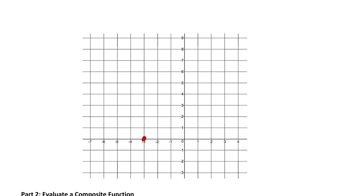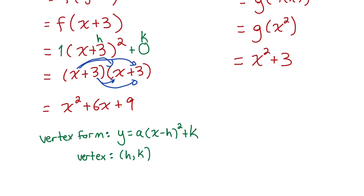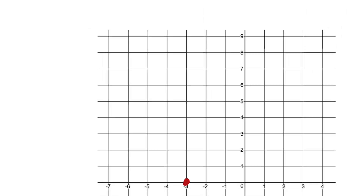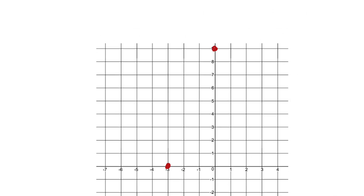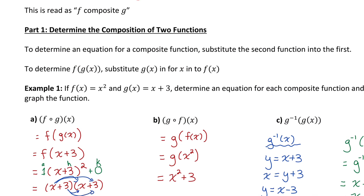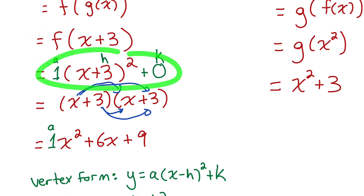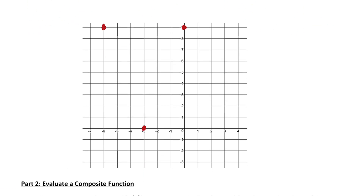I know this quadratic opens up because the a value is positive 1. From the standard form, I can also see the constant value is 9, which means the y-intercept will be at 9. Because quadratics are symmetrical, if 3 to the right of the vertex the parabola is at a height of 9, then 3 to the left it will also be at height 9. I could get some more points for the rounded shape — for example, subbing in negative 2 gives a y-coordinate of 1, so I could plot a couple more points as well.